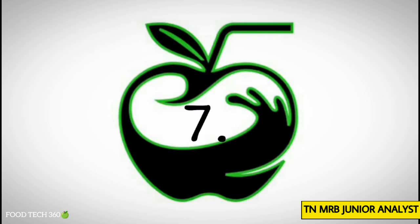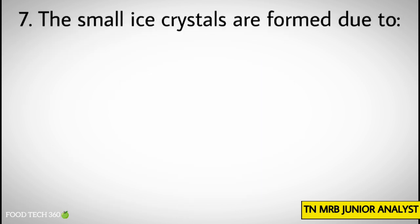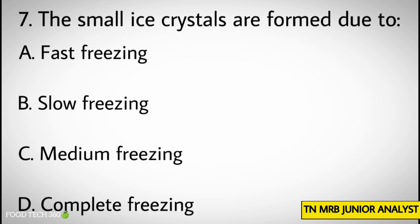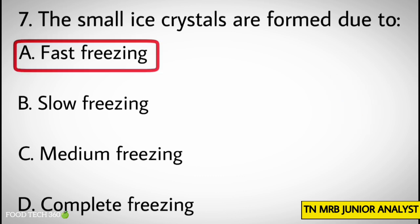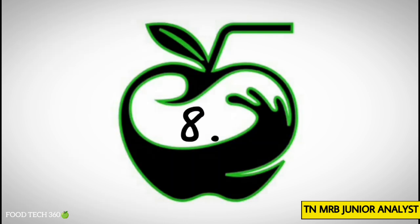Question number 7: The small ice crystals are formed due to? Options: A. Fast freezing, B. Slow freezing, C. Medium freezing, D. Complete freezing. Correct answer: A. Fast freezing.